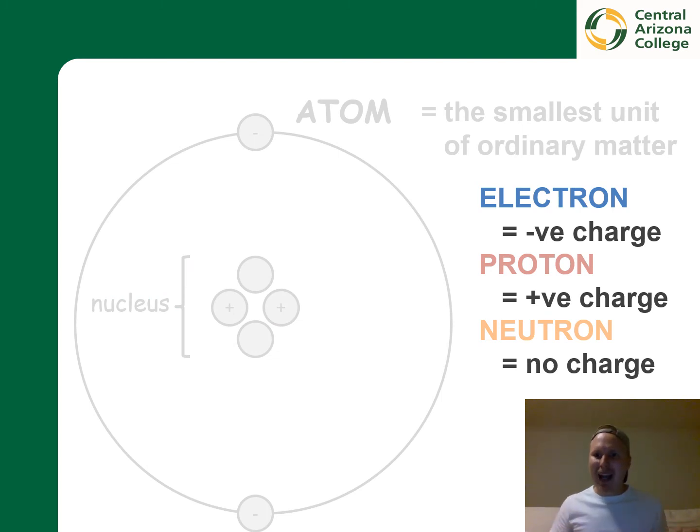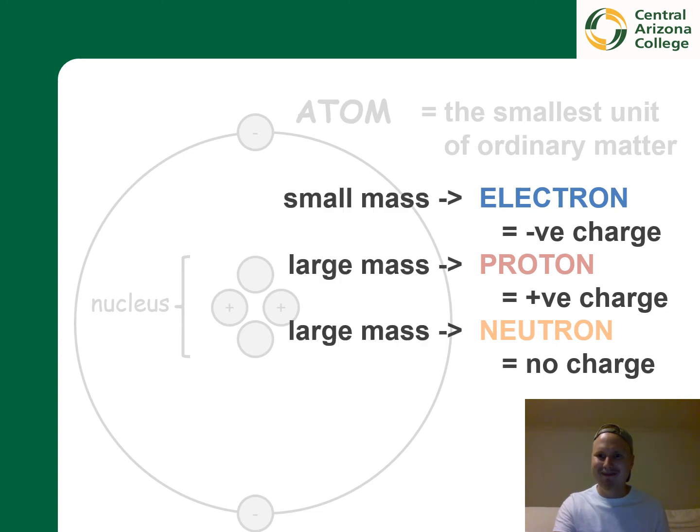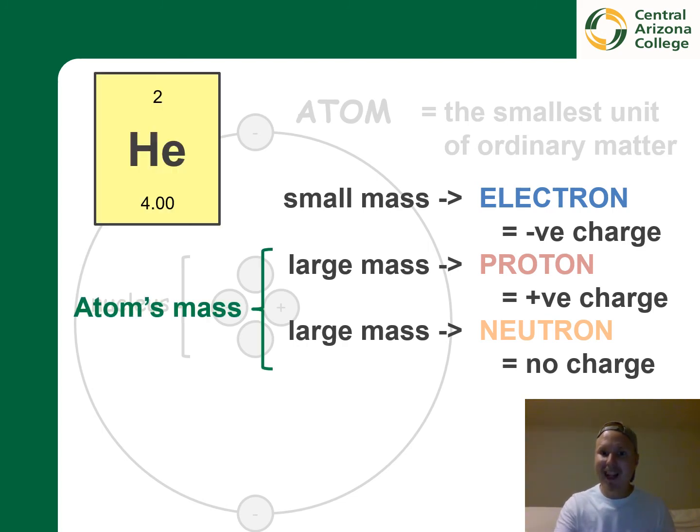But let's look at parts of an atom a little more. We will end up finding that electrons carry a very small mass. Protons and neutrons instead have a large mass. Therefore, when we are calculating an atomic mass, we only include the protons and neutrons to this.